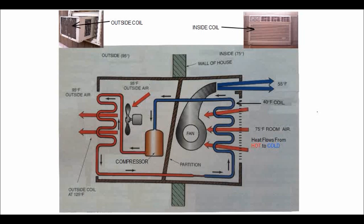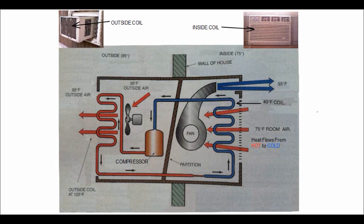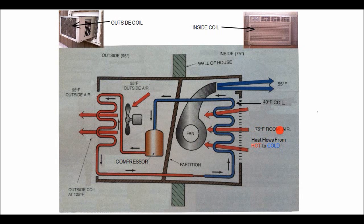Alright, let's review. So we have our 75 degree room air, which is drawn across the 40 degree coil by the indoor fan. And we've learned that heat flows from hot to cold, so the heat in the 75 degree warm air flows out of the air and into the colder refrigerant.